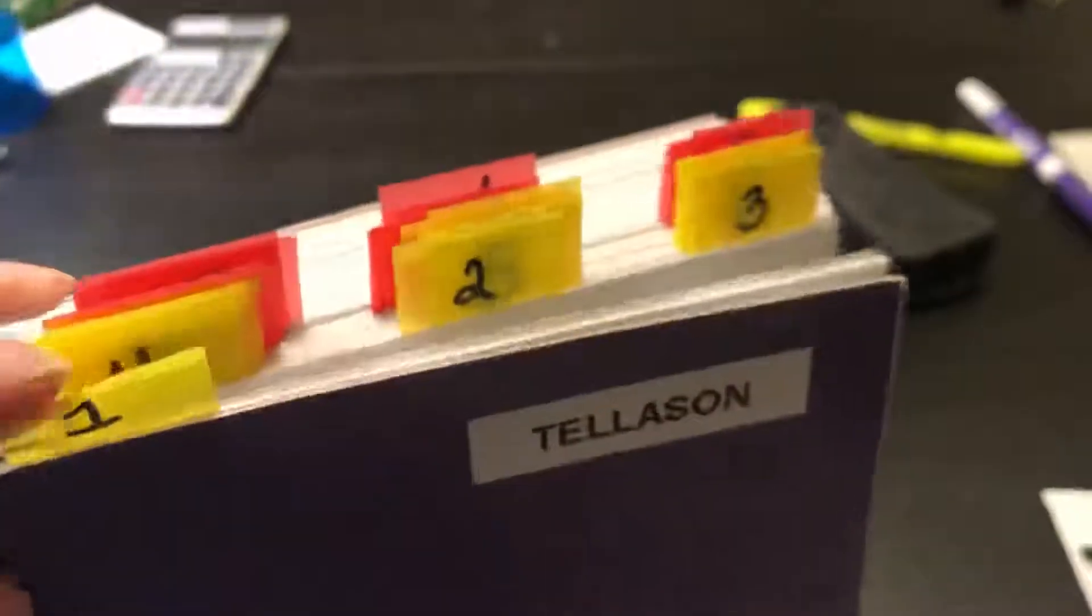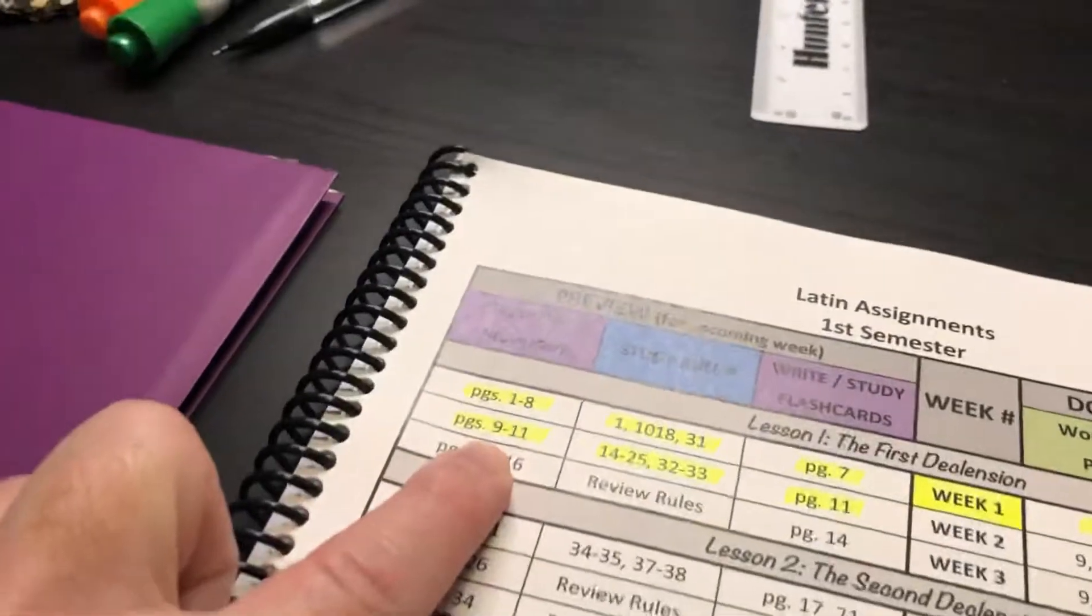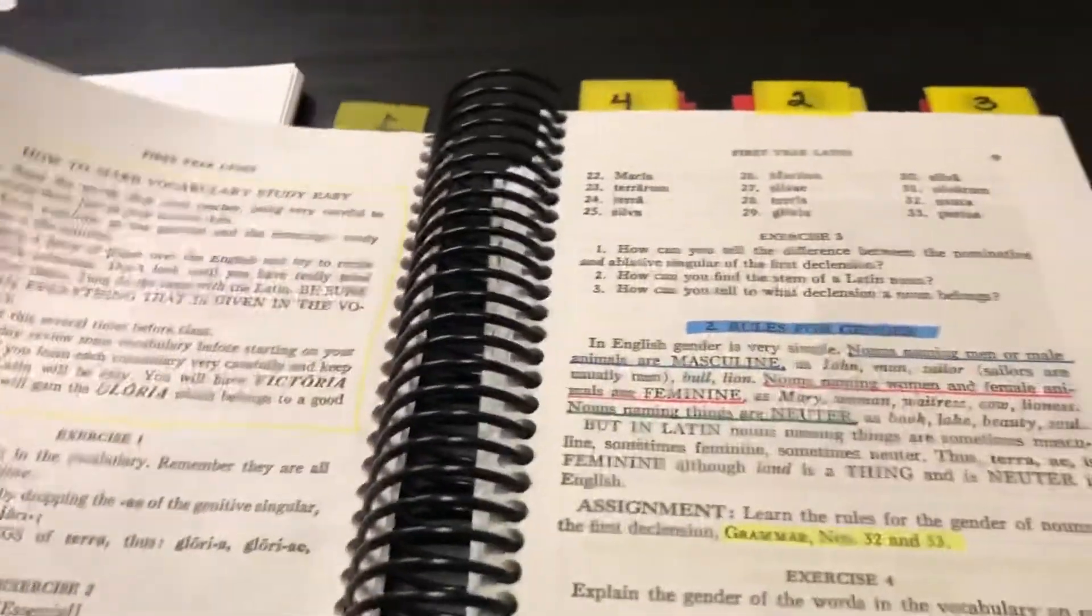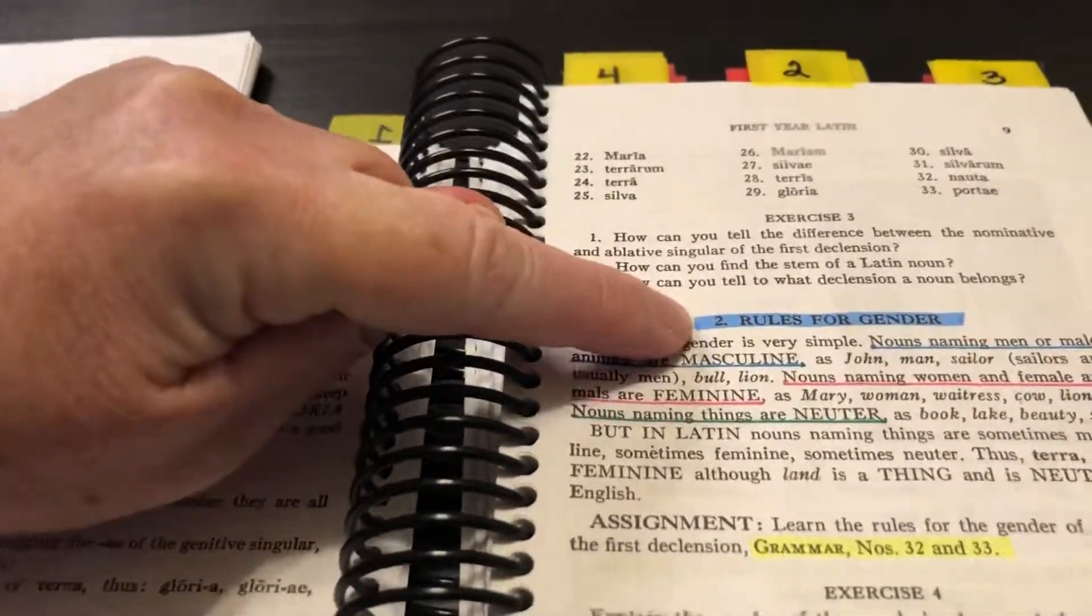So I went through and I labeled, I put tabs—I think yellow is first semester, red is second semester for the week number. So if I knew we just had week two, I'm going to show you that week. I knew that week two they previewed and highlighted pages nine through eleven.